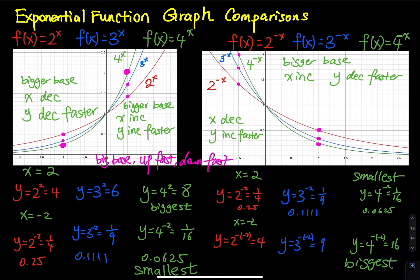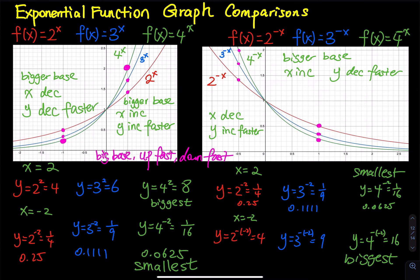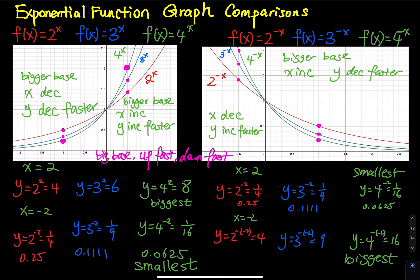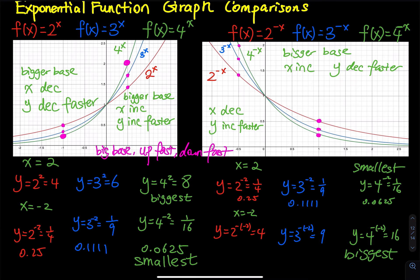For more detail, let's pick x equals 2. Plugging into the three functions: 2 squared is 4, 3 squared is 9, 4 squared is 16. So for the bigger base of 4, we have the highest y value of 16. When x is negative 2, we get fractions: 2 to the negative 2 is 1/4, 3 to the negative 2 is 1/9, and 4 to the negative 2 is 1/16. Since 16 is the biggest denominator, 1/16 gives the smallest quotient.